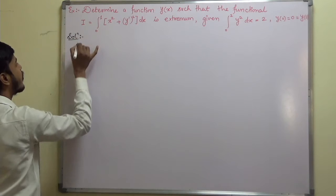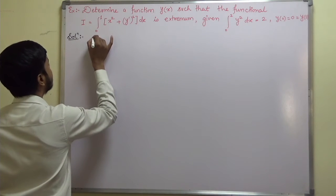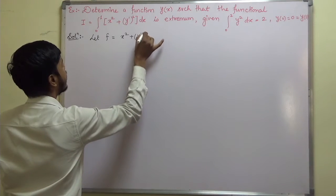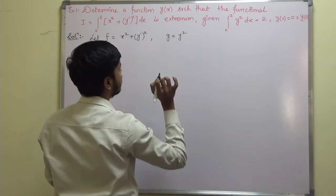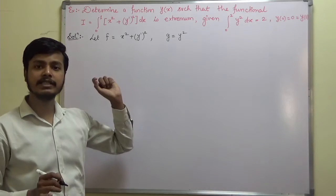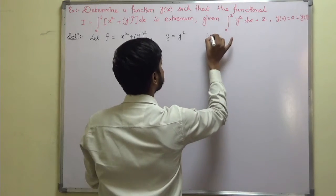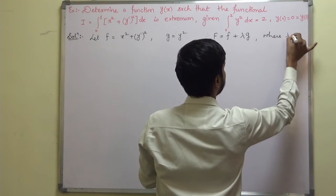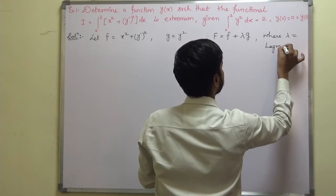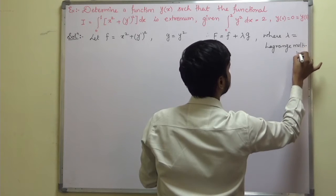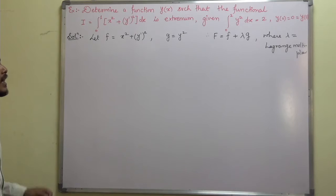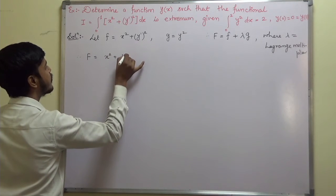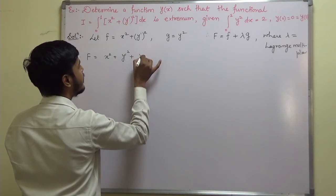We are aware of problems of this type. Let f equal to x squared plus y-dash squared, and let g equal to y squared. The very first thing we do is construct the augmented functional. Therefore, capital F is equal to f plus lambda g, where lambda is the Lagrange multiplier. So F equals x squared plus y-dash squared plus lambda times y squared.